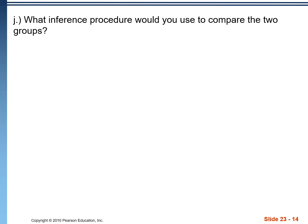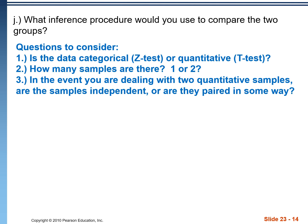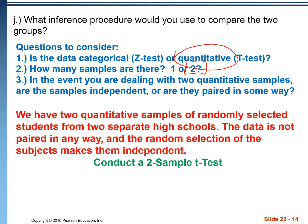Lastly, what inference procedure would you use to compare the two groups? This is a name-the-test problem. First, figure out: is the data categorical — which would be a z-test — or quantitative, which leads to a t-test? In this case, we're finding the number of calories; that's quantitative, it's numerical data. How many samples are there? It's always either one or two. Here we have two samples, one from an urban area and one from a rural area. The third thing to ask is: with two samples on a quantitative data set, are the samples independent or paired in some way? They're independent, so it would be a two-sample t-test. If they were paired, we would do a matched pairs t-test. Here we have two quantitative samples of randomly selected students from two separate high schools. The data is not paired in any way, and the random selection makes these results independent of one another, so we conduct a two-sample t-test.